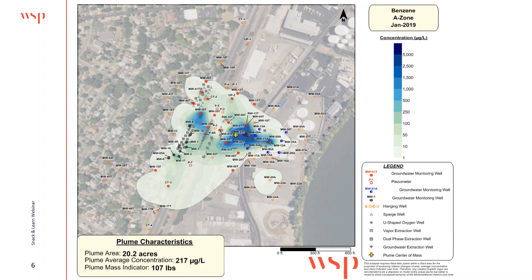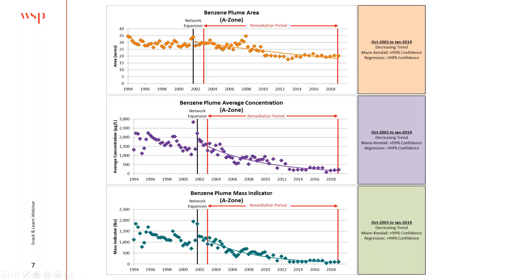Close to 30 years of data — I just showed it to you in 30 seconds how the plume is behaving, which regulators really like to see. Looking at the metric trends: plume area is on top, average concentration in the middle, mass indicator on the bottom. We do a statistical analysis on behavior since remediation started using Mann-Kendall and regression. There are very strong, statistically significant decreasing trends in area, concentration, and mass — objectively confirming this plume is remediating and getting smaller.